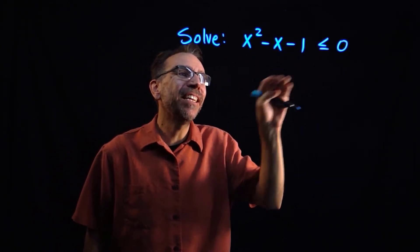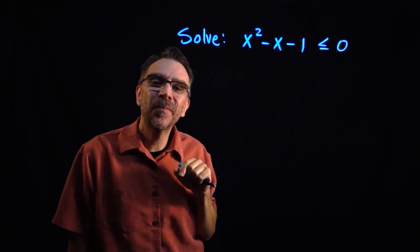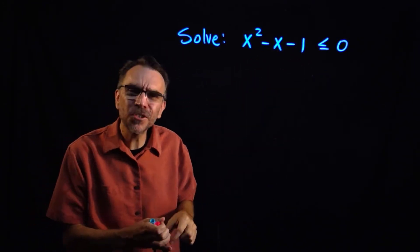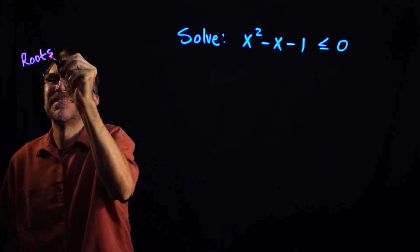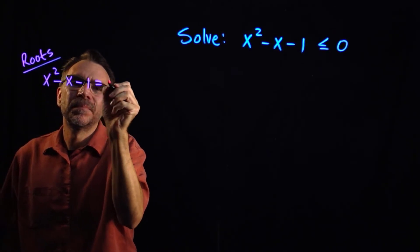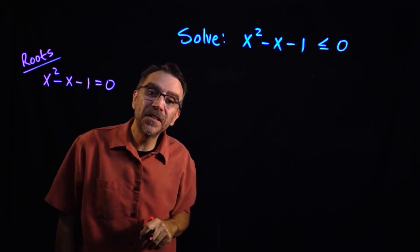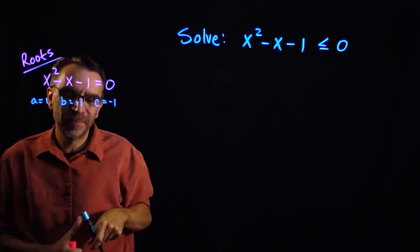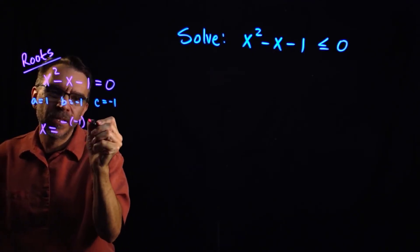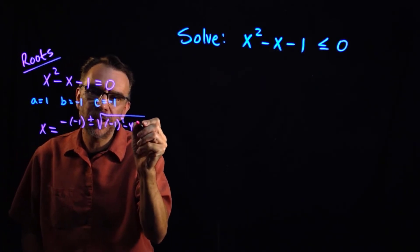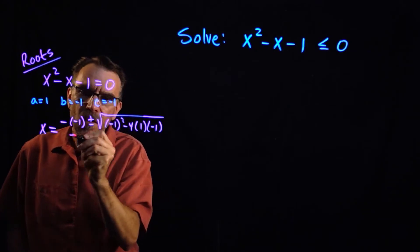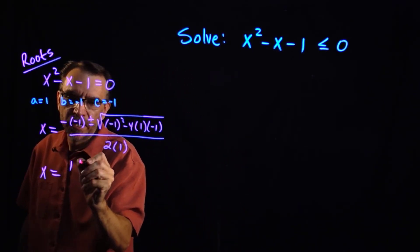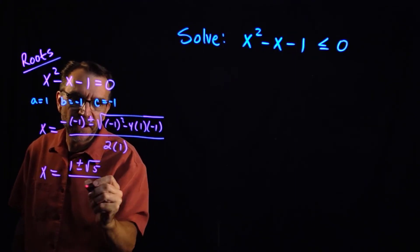Here we have another quadratic inequality: x squared minus x minus 1 is less than or equal to 0. This one is a little harder because the critical numbers — the roots — are not as easy to find. This quadratic doesn't factor, so we apply the quadratic formula. With a equals 1, b equals negative 1, and c equals negative 1, we get x equals negative b plus or minus the square root of b squared minus 4ac all over 2a.